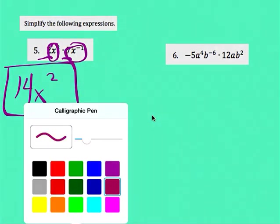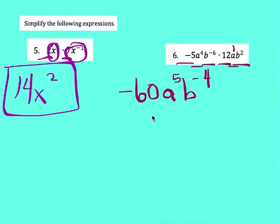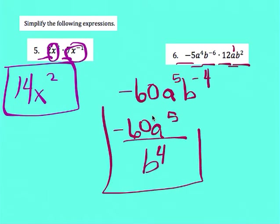For number 6, we multiply negative 5 times 12, giving negative 60. Then A to the fourth times A to the first — remember when there's no exponent it's 1 — gives A to the fifth. B to the negative 6 times B squared gives B to the negative 4th. Referencing our checklist, that negative exponent means it's not fully simplified. So I flip B to the negative 4th to the bottom, making it a positive B to the 4th. That is the final answer: negative 60 A to the fifth divided by B to the fourth.